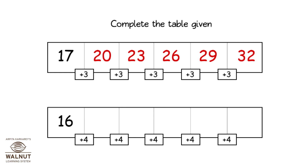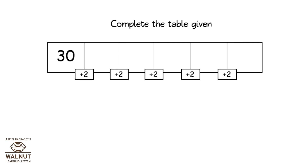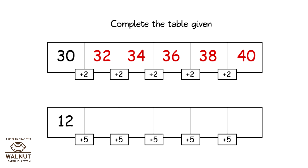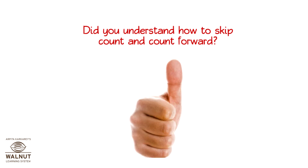Starting at sixteen, skip count by four: sixteen, twenty, twenty-four, twenty-eight, thirty-two, and thirty-six. Did you understand how to skip count and count forward? Yes, very good!